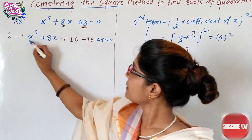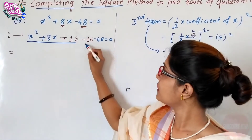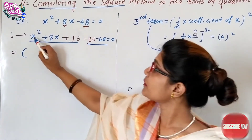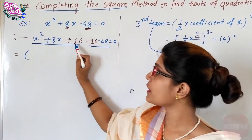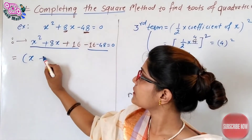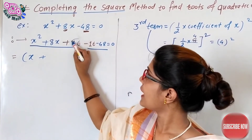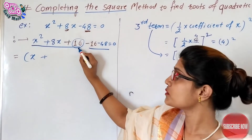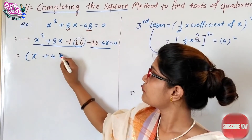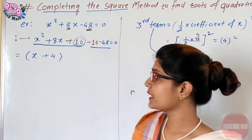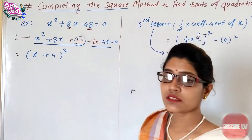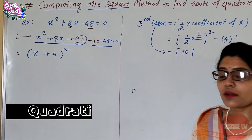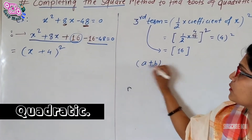Now check the equation. The terms x squared plus 8x plus 16 form a perfect square. Since the symbol is plus, write plus as it is. The square root of 16 is 4, so you can write this as (x + 4) squared directly in your equation.